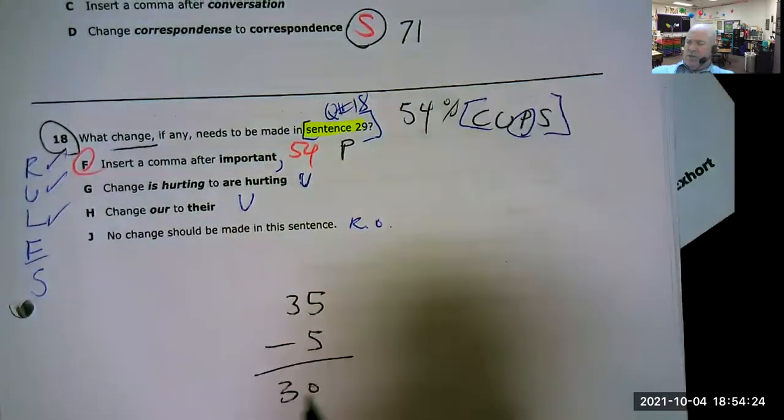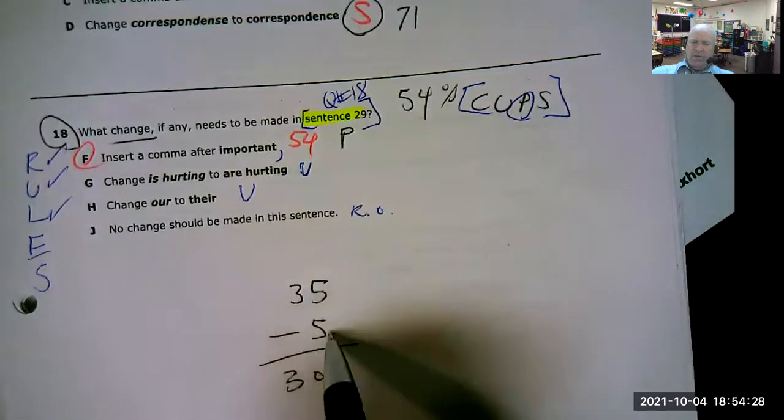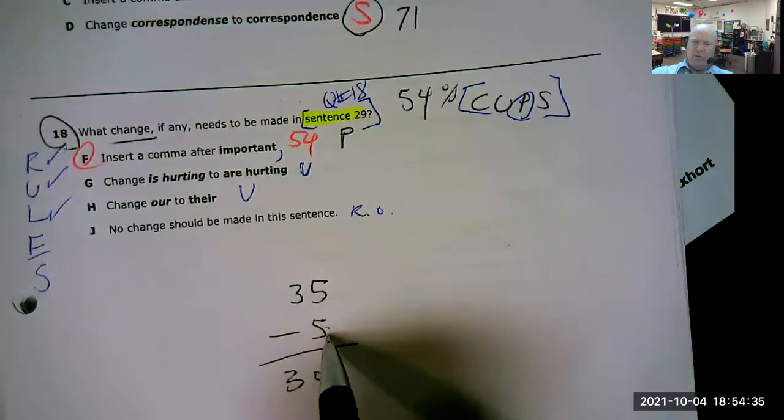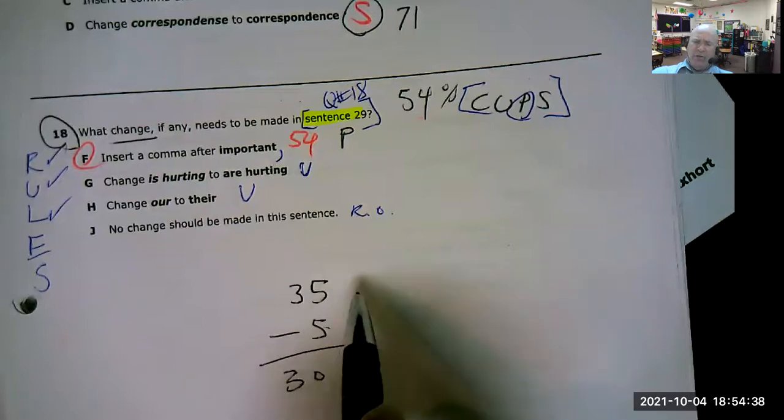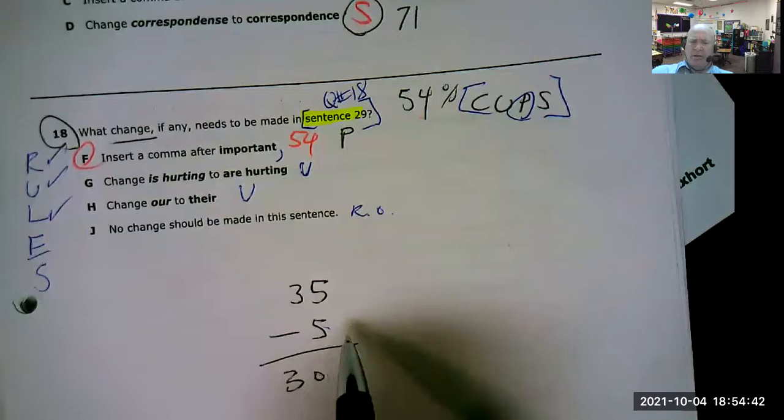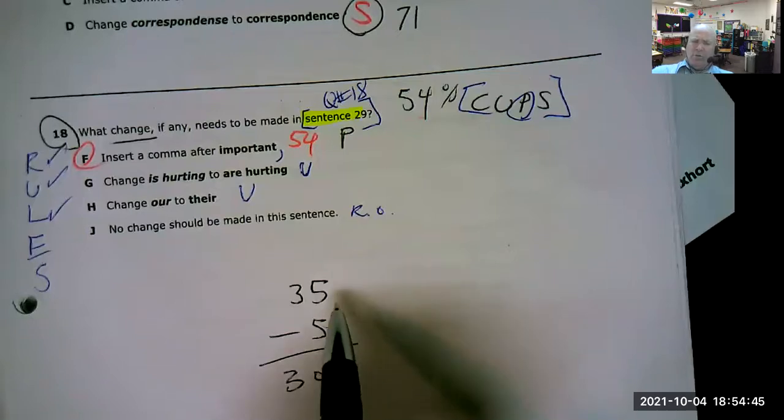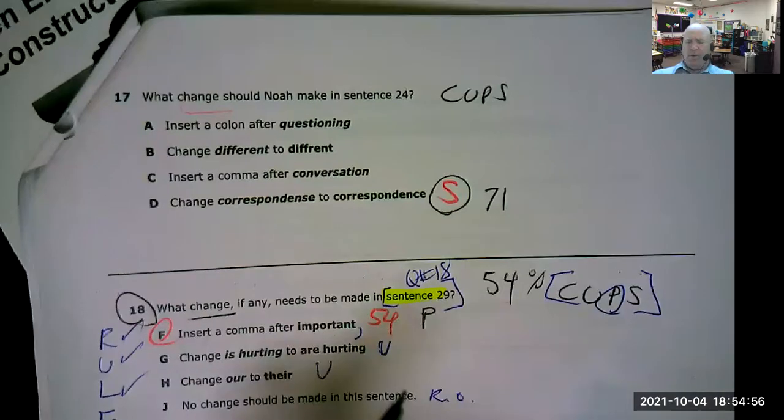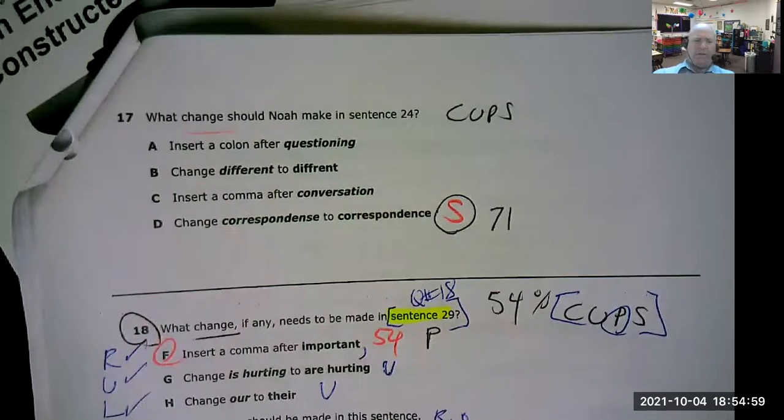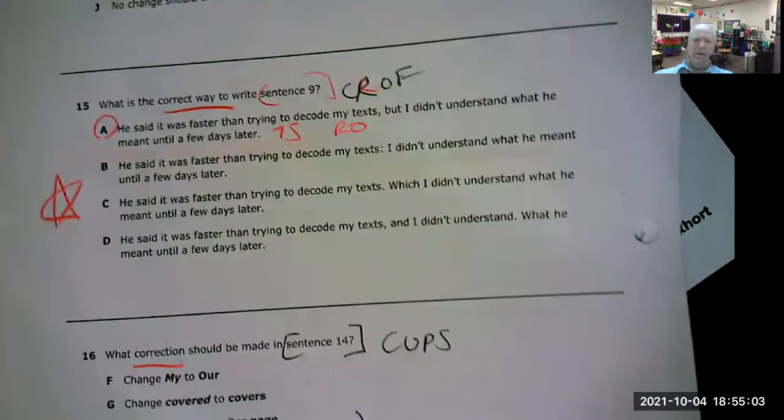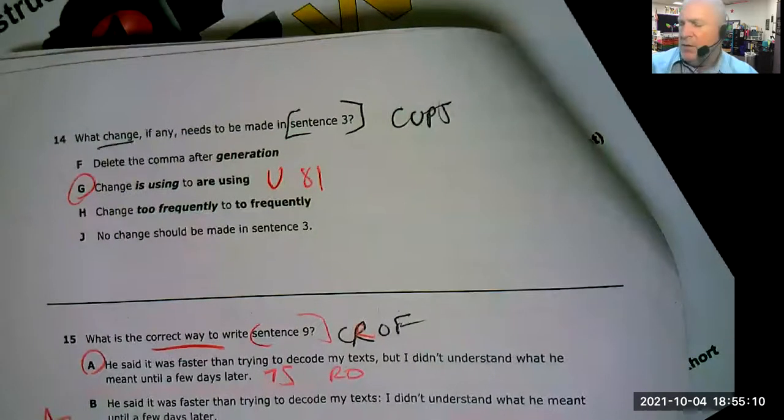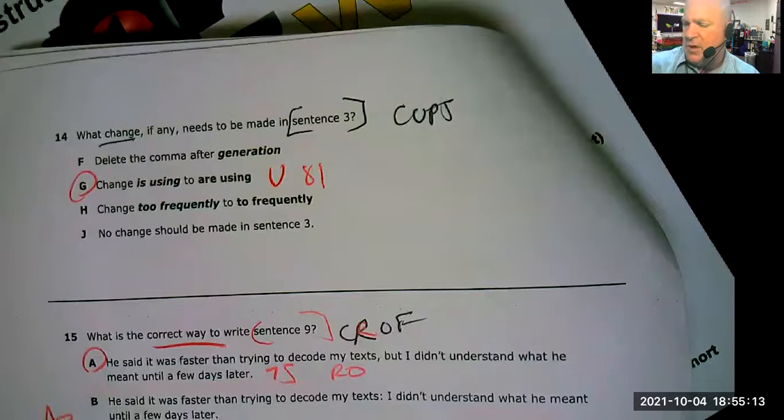And again, this passage has 35 sentences, but only five sentences are being asked about. And so for your kids who struggle, yes, if you want to have the majority of your kids or the ones who are really good at reading, read everything in context, that's great. But for your kids who struggle, they're going to be able to gain a lot more confidence by just reading the five sentences that the questions are about. Sentence 24, sentence 29, sentence 14, sentence 9, and sentence 3. It's not asking about entire passages or entire paragraphs.